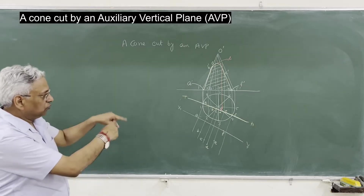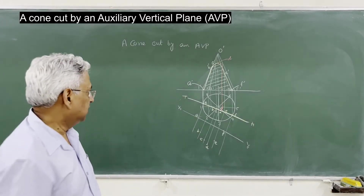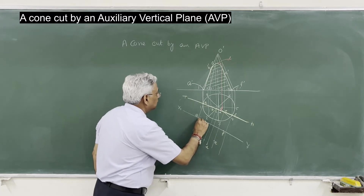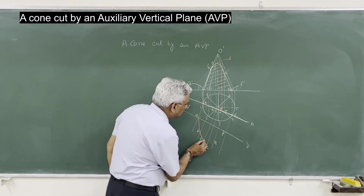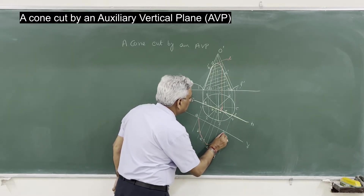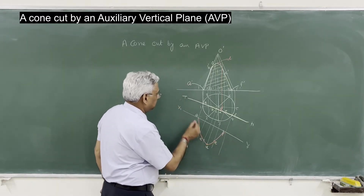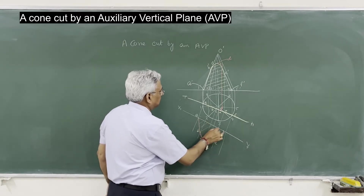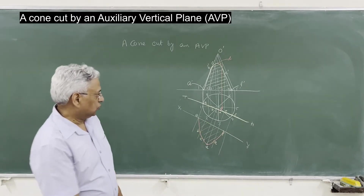Now join these points through a smooth curve — you get the true shape of the cut section. This is the true shape.